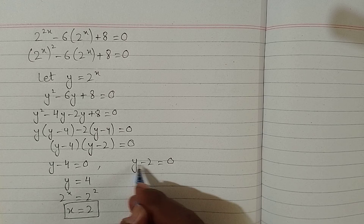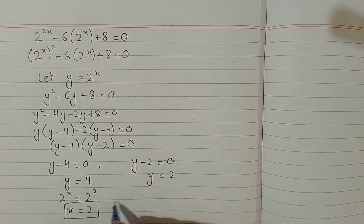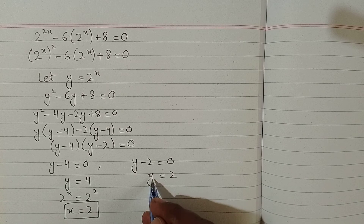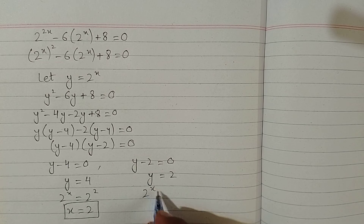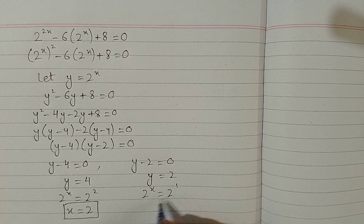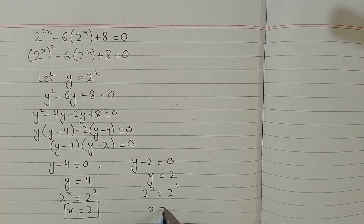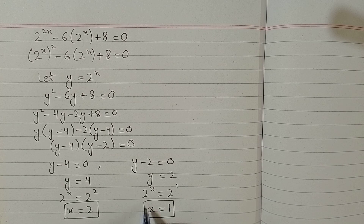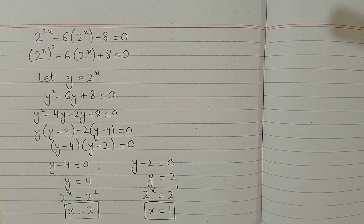From y minus 2 equals 0 we get y equals 2. Replacing y with 2 raised to the power x, and writing 2 as 2 raised to the power 1, the bases are the same so the powers are equal, giving x equals 1. This is the required solution of the given equation.